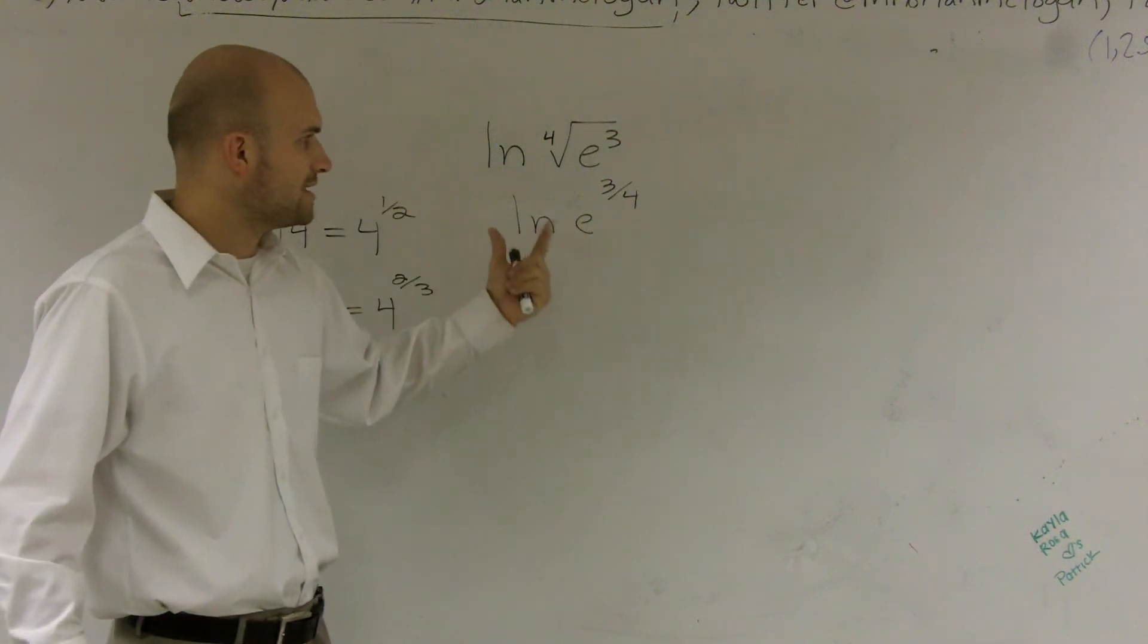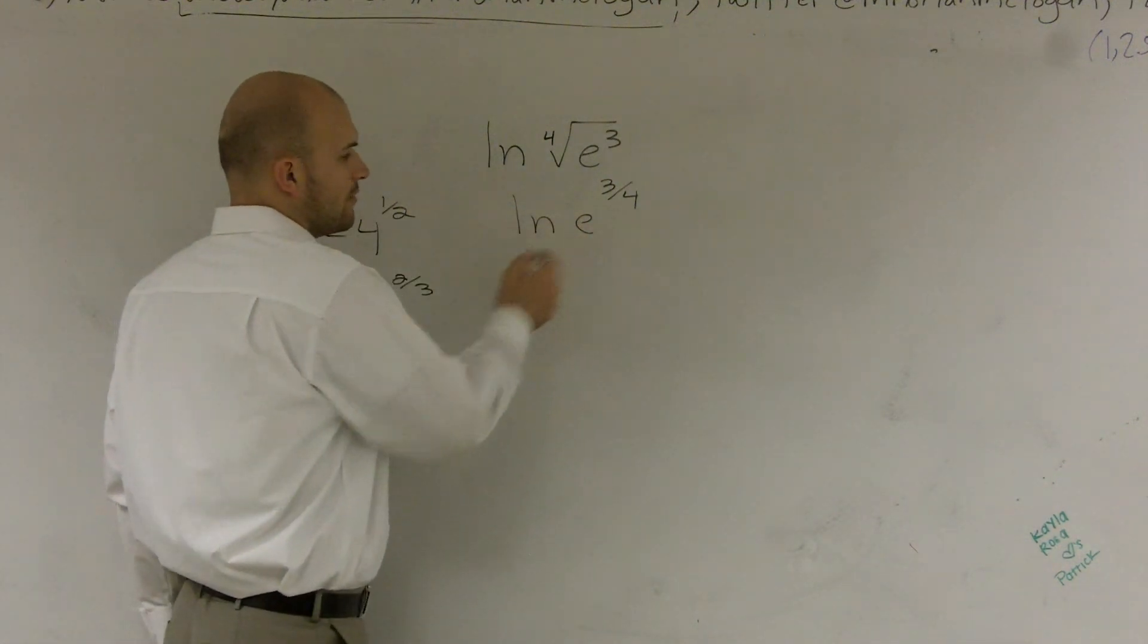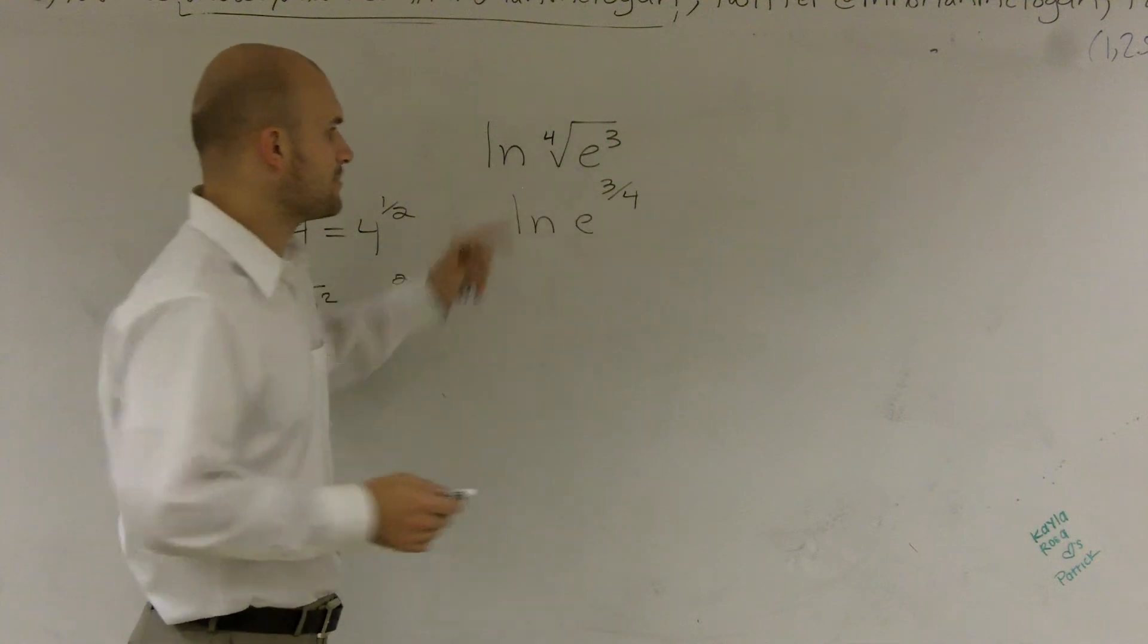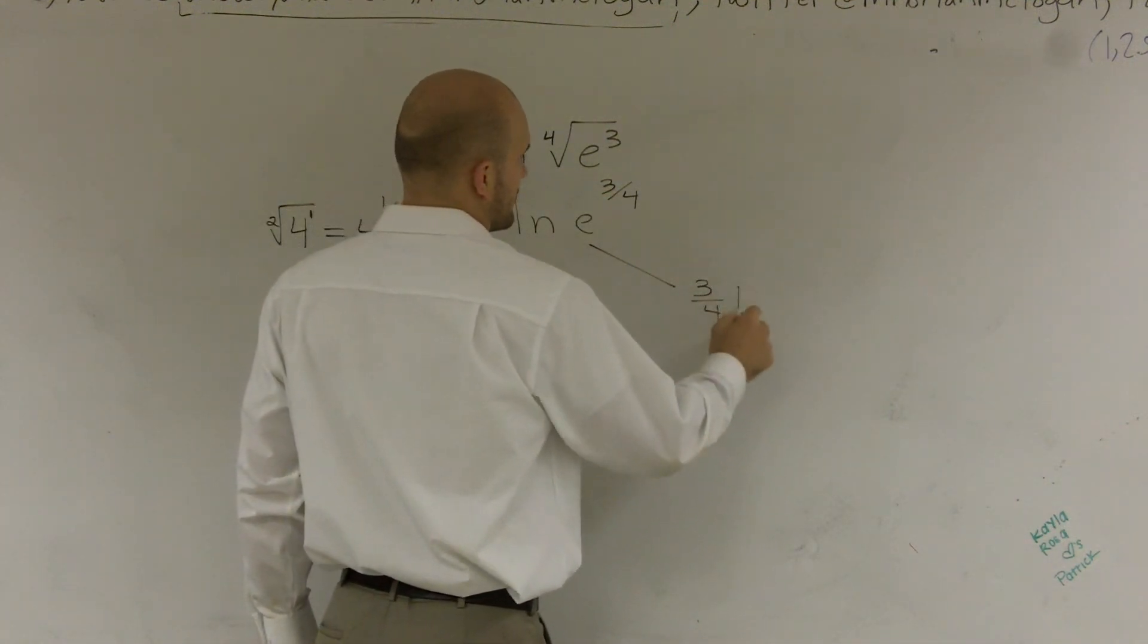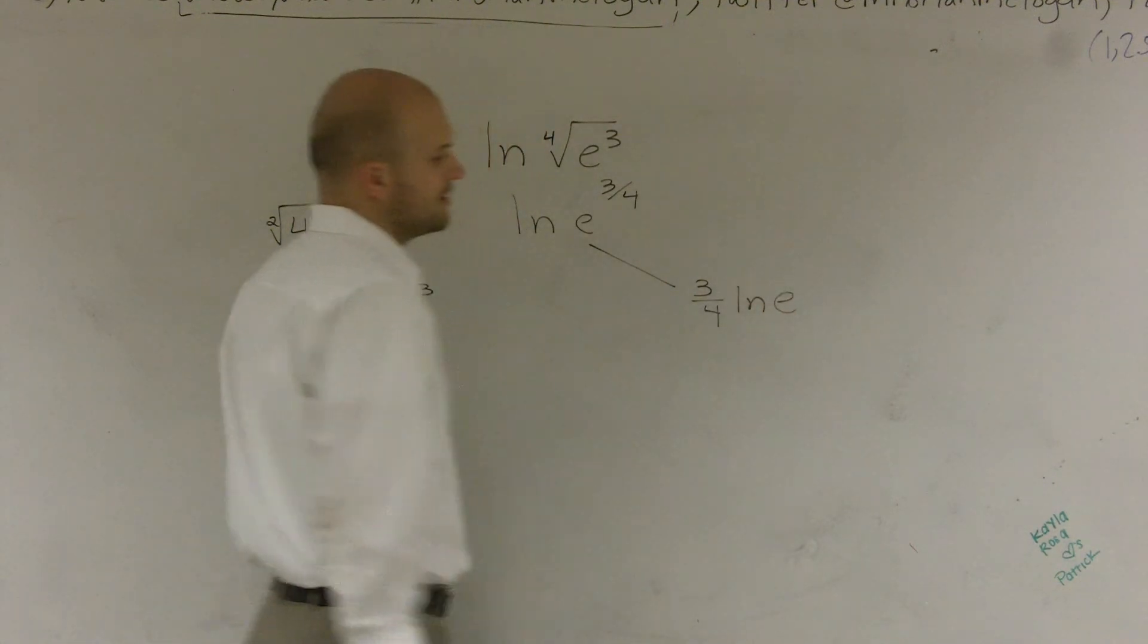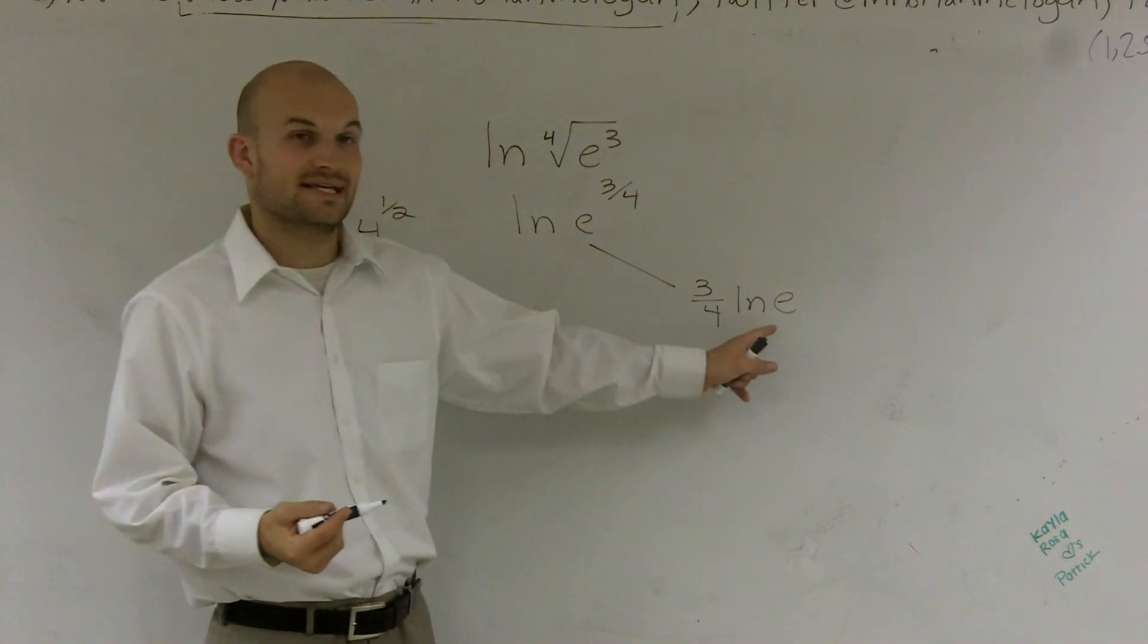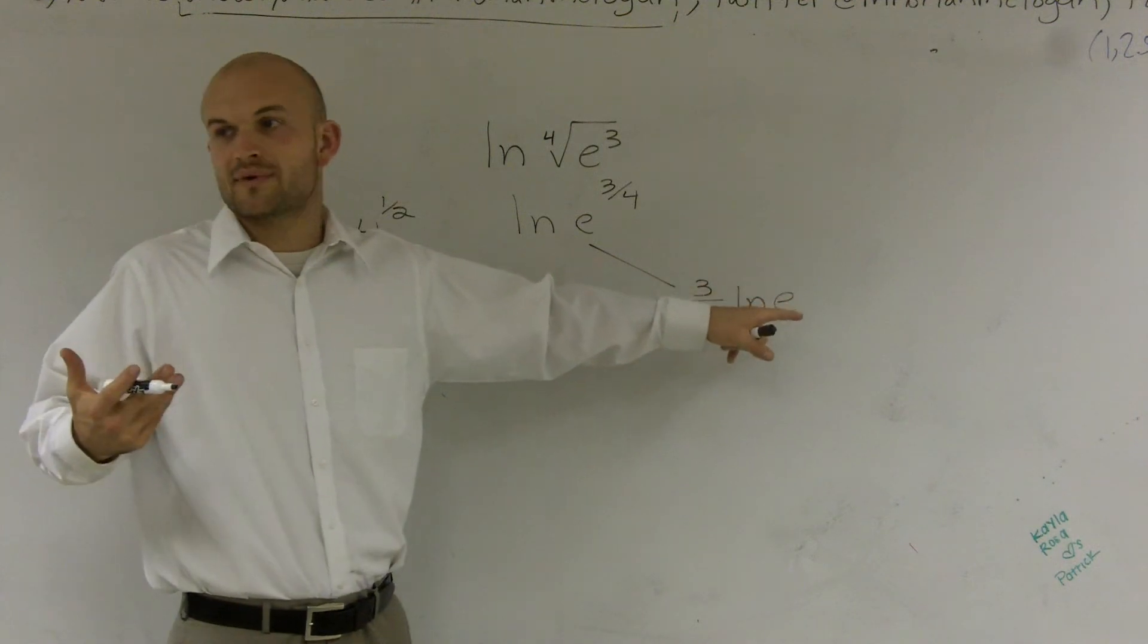My properties of logarithms tell me there's two different ones. One is: I can bring my number in front. So I could do this if I wanted to. I could say 3/4 ln of e. Now remember, ln always has a base e.